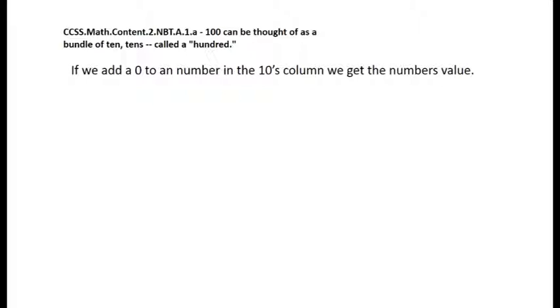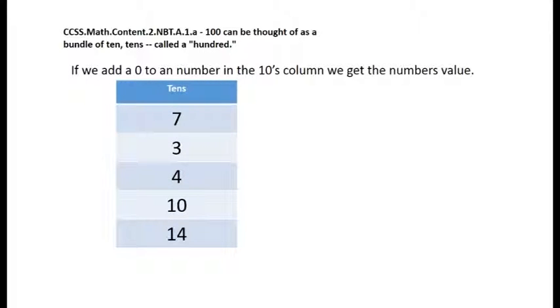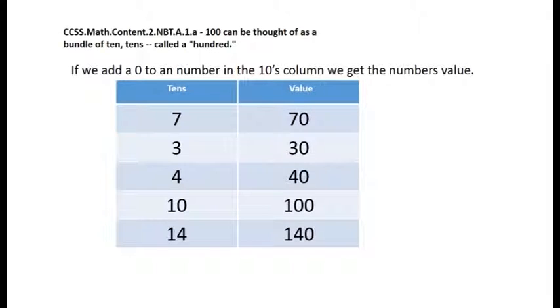One hundred can be thought of as a bundle of ten tens. This is called a hundred. If we add a zero to a number in the tens column, we get the number's value. Seven tens equals 70, three tens equals 30, four tens equals 40, ten tens equals 100.